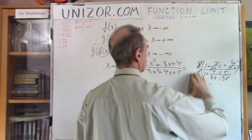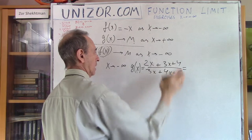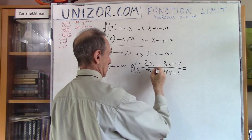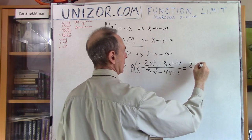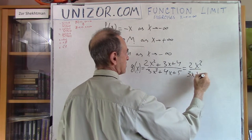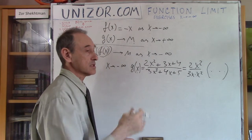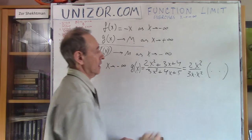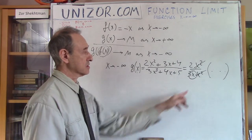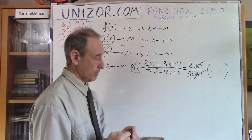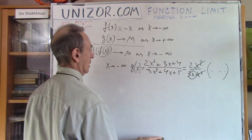Finally, what if I have a higher power in the denominator? In this case, it would be 2x² divided by 3x times x², which is something constant plus an infinitesimal value. Since x goes to negative infinity and this is the denominator, the fraction will go to 0, but from the negative side.